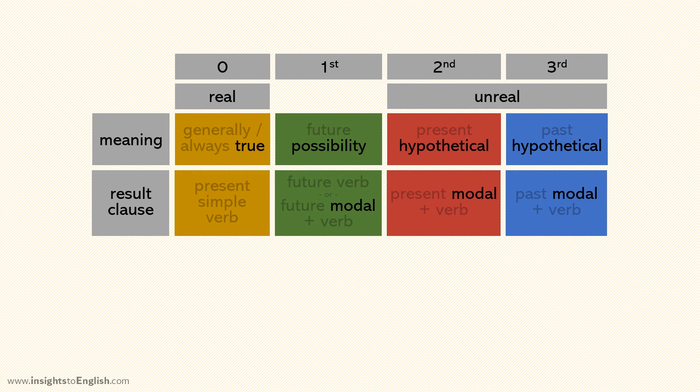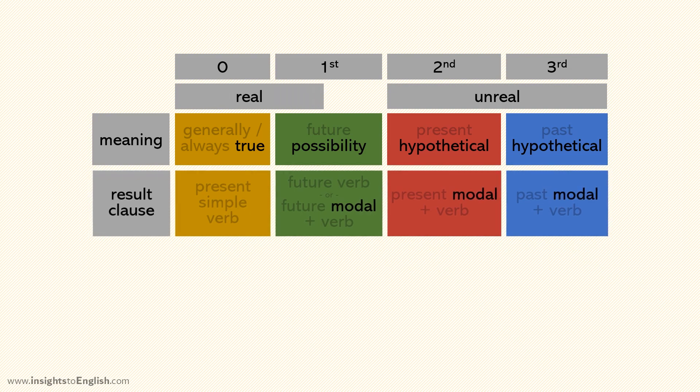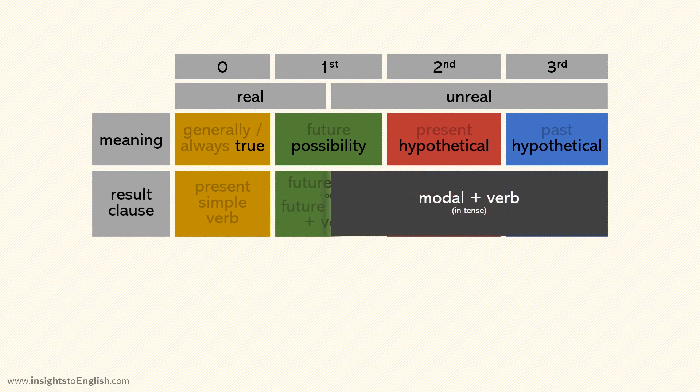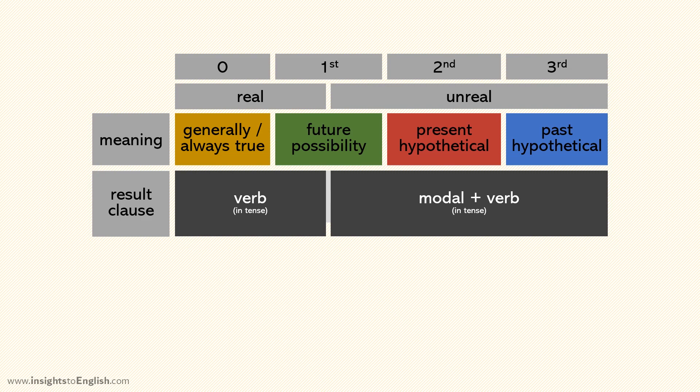What about the first conditional? Well, it's in the future, so it's not certain. If we're confident something will happen, it's real. So we'll say will or be going to. But if we're not really sure, or if we doubt it'll happen, it's unreal. If it's unreal, we need a modal verb. But if it is real, then we don't use a modal verb, right? Exactly. And either way, we use the same tense as the meaning.